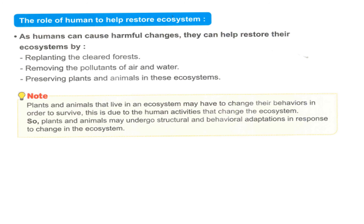Plants and animals that live in an ecosystem may have to change their behaviors in order to survive. This is due to human activities that change the ecosystem, so plants and animals may undergo structural and behavioral adaptation in response to changes in the ecosystem.